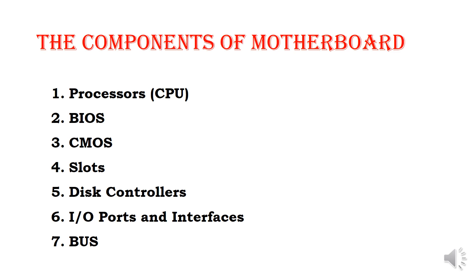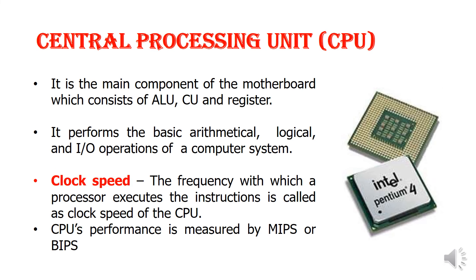Then, components of motherboard. We have mainly: processor, BIOS, CMOS, slots, disk controllers, ports, and interfaces, and finally, bus. These are the main components of the motherboard. First, the processor — that means central processing unit. It is the main component of the motherboard. It performs almost all operations of the computer: basic mathematical operations, logical operations, relational operations, and input/output operations.